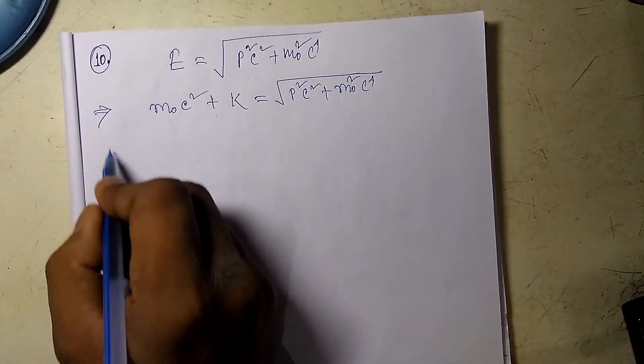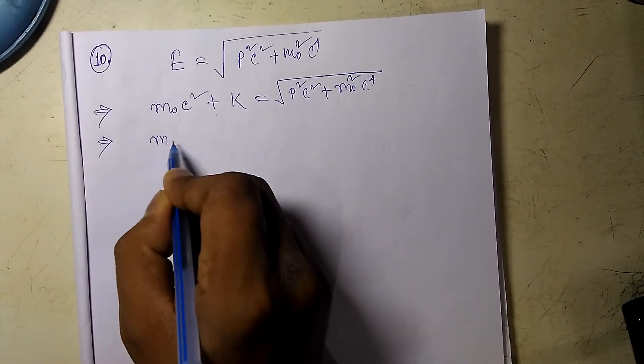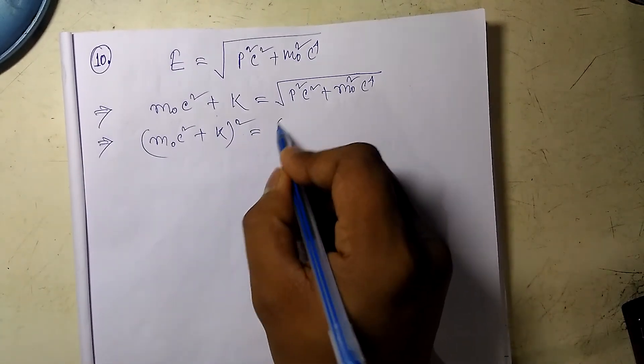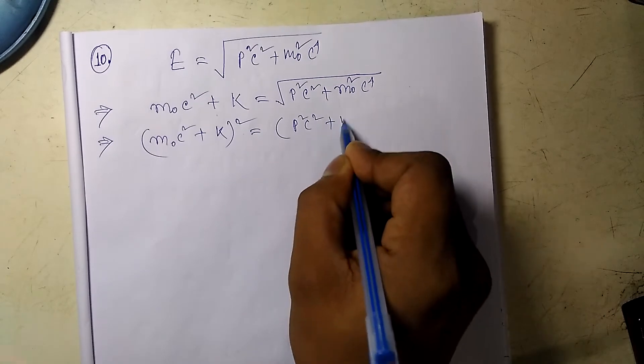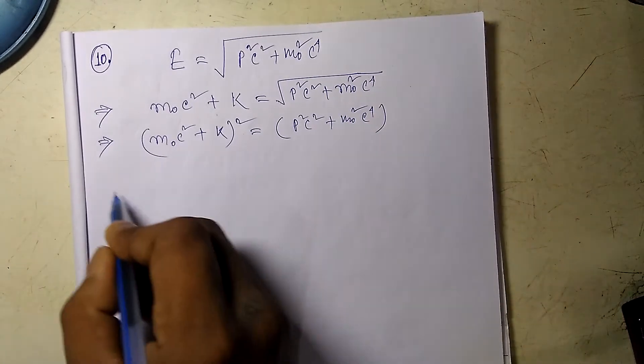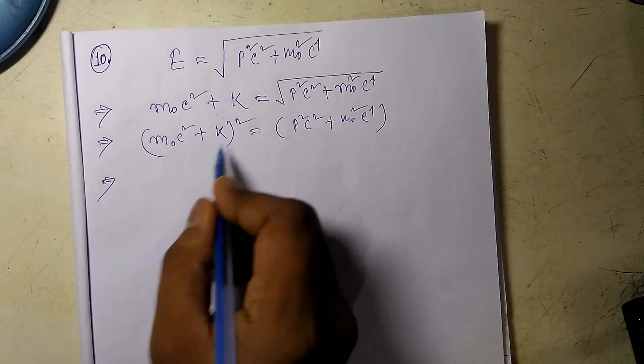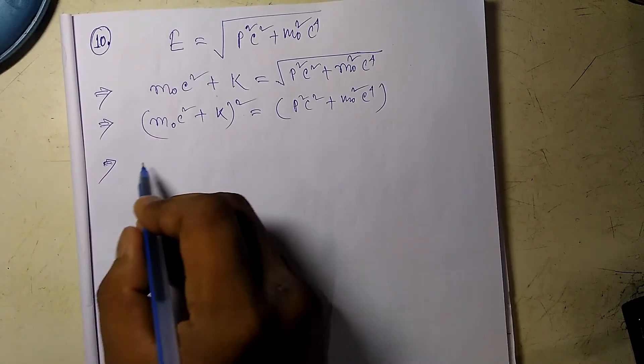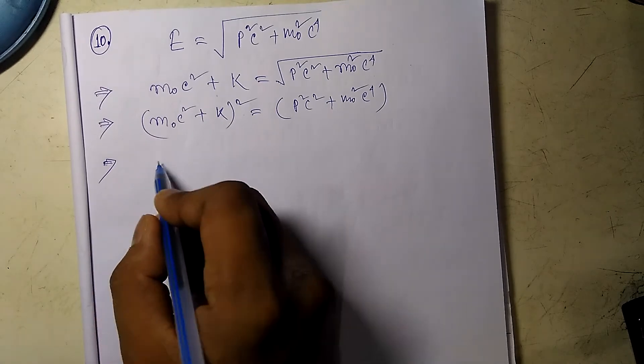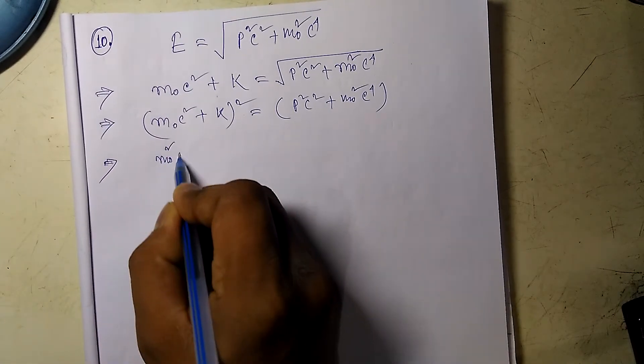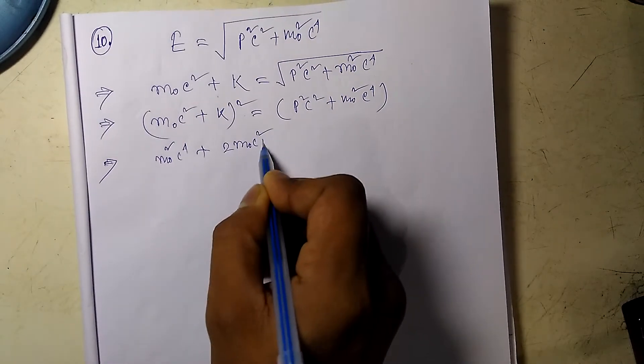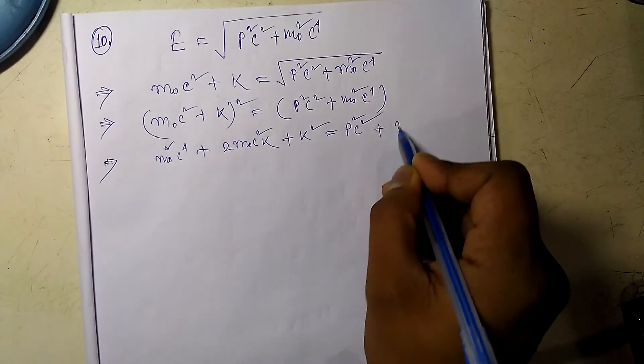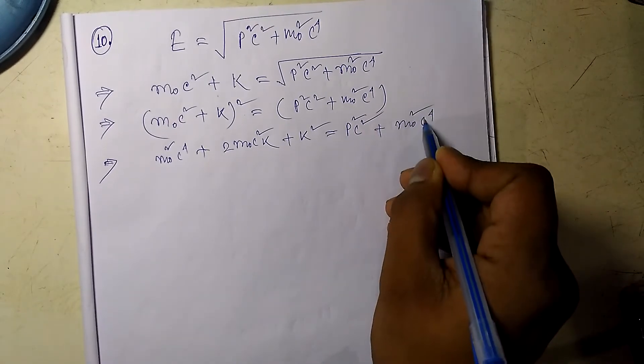If I take the square of both sides, taking the square we will have m₀²c⁴ plus 2m₀c²K plus K² equal to p²c² plus m₀²c⁴.